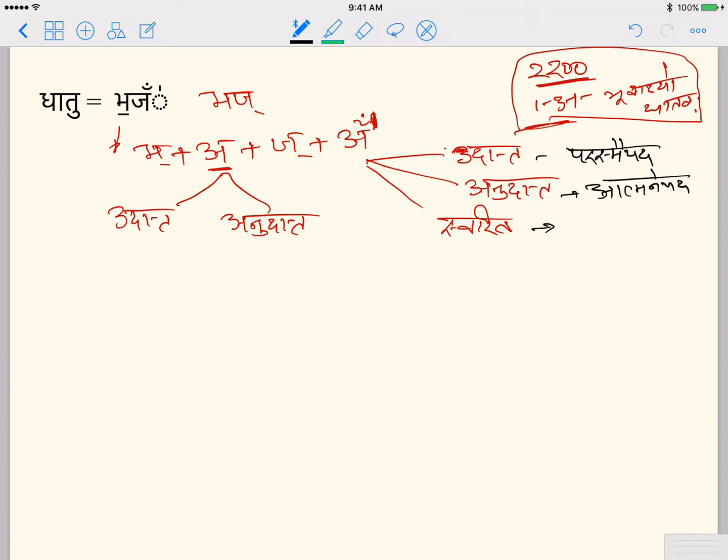And this one, svarita ipa means ubhayapada. So that's how it is. And now if you look at this part, if it is udhatta then it will get itagama. And anudhatta means it will not get itagama.